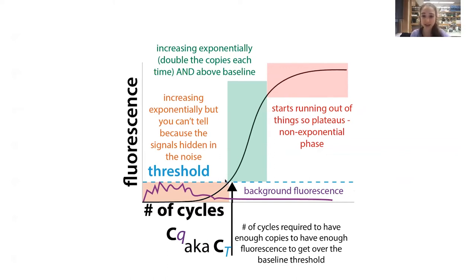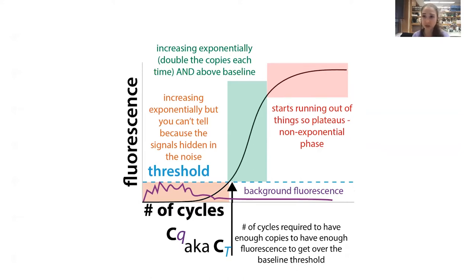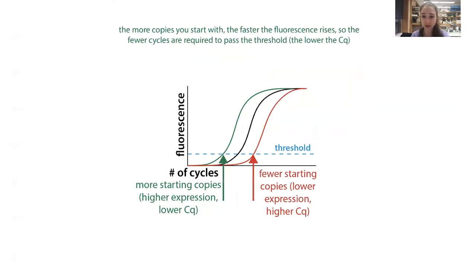We define a threshold value to compare where samples cross it. You'll normally also run a normalization gene alongside your gene of interest — something expressed similarly in all cell types under all conditions. Common normalization genes include actin, GAPDH, and ribosomal RNAs. This lets you normalize between samples: a low CQ means you started with a lot of copies, but if one sample simply had more cells, that's artificial. Normalization controls, also called endogenous controls, correct for this.